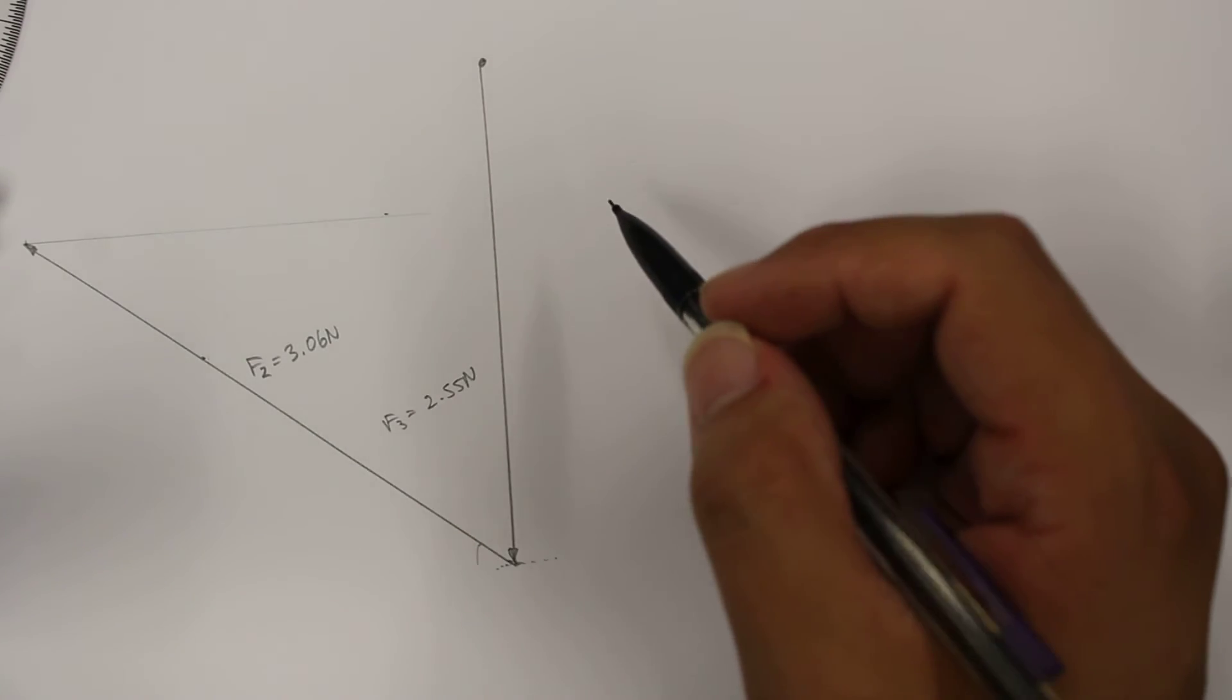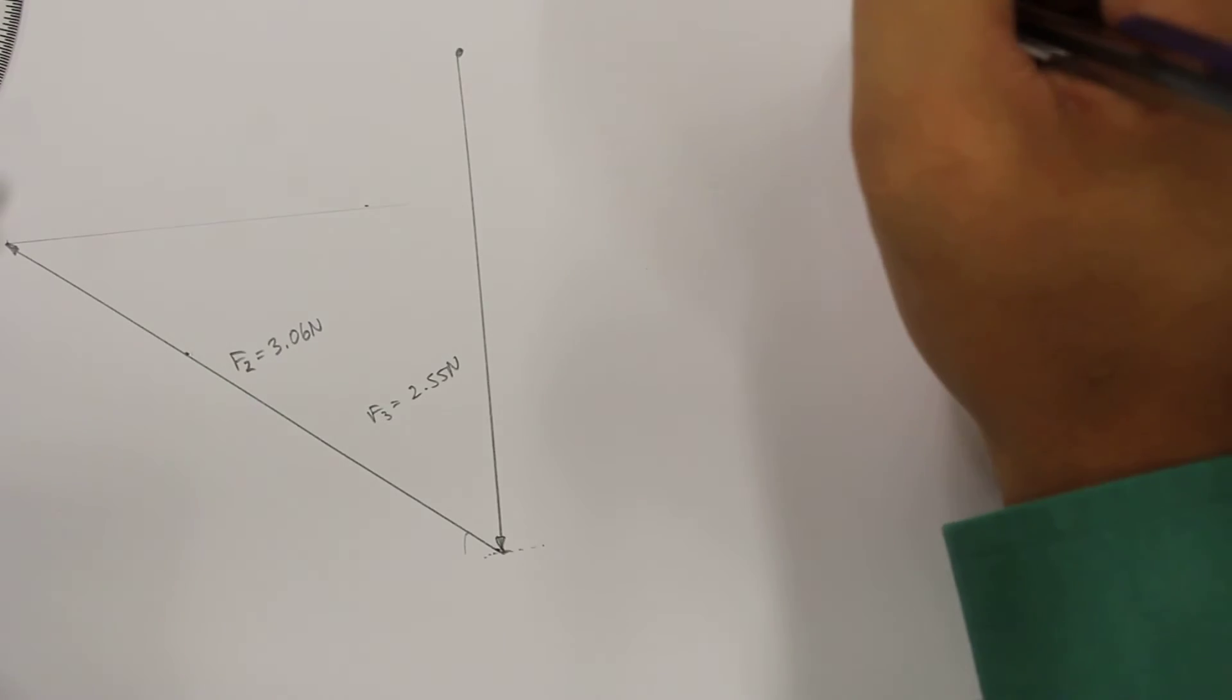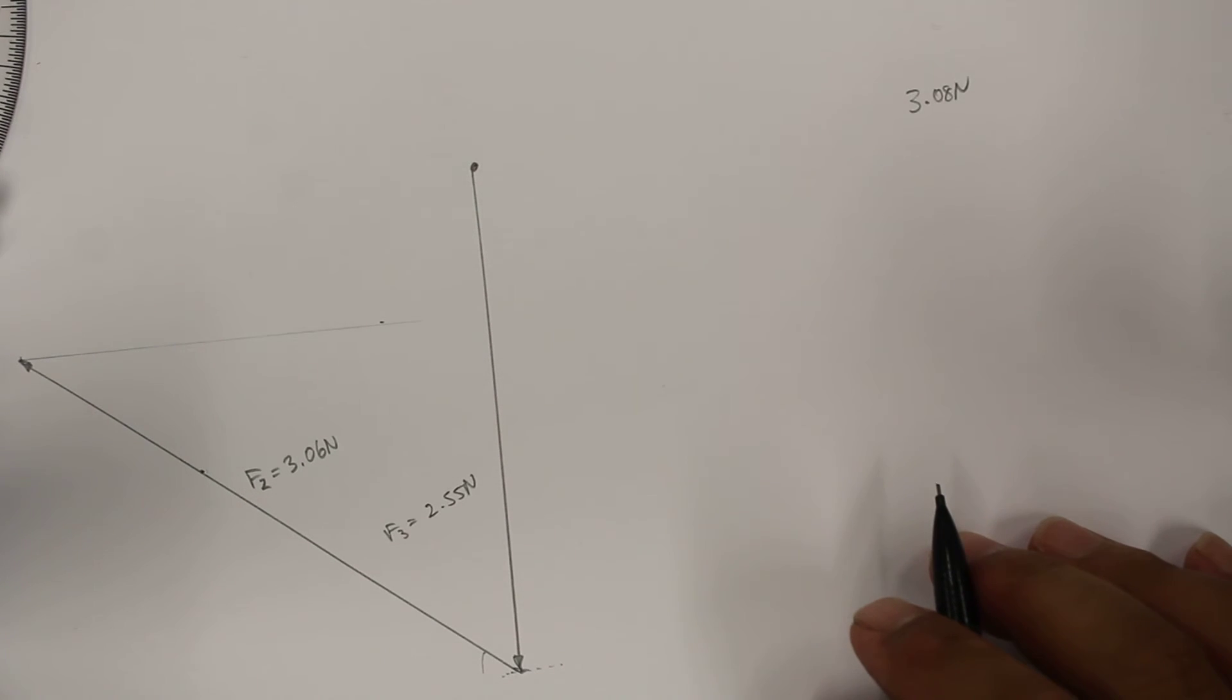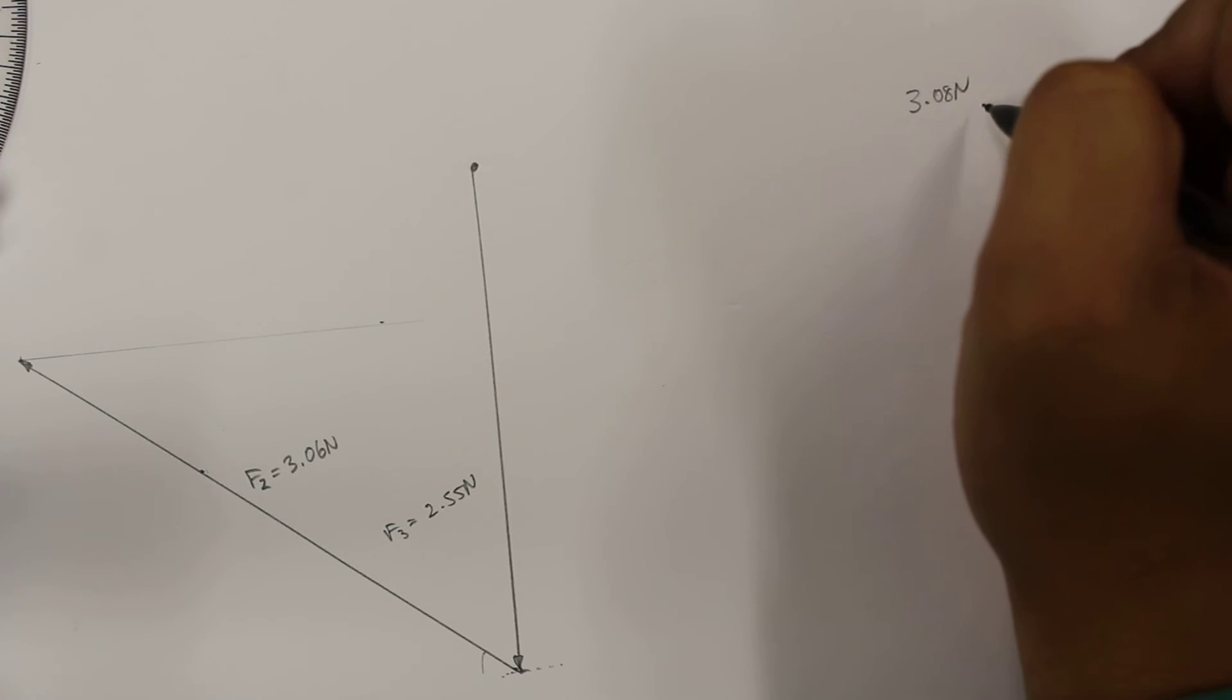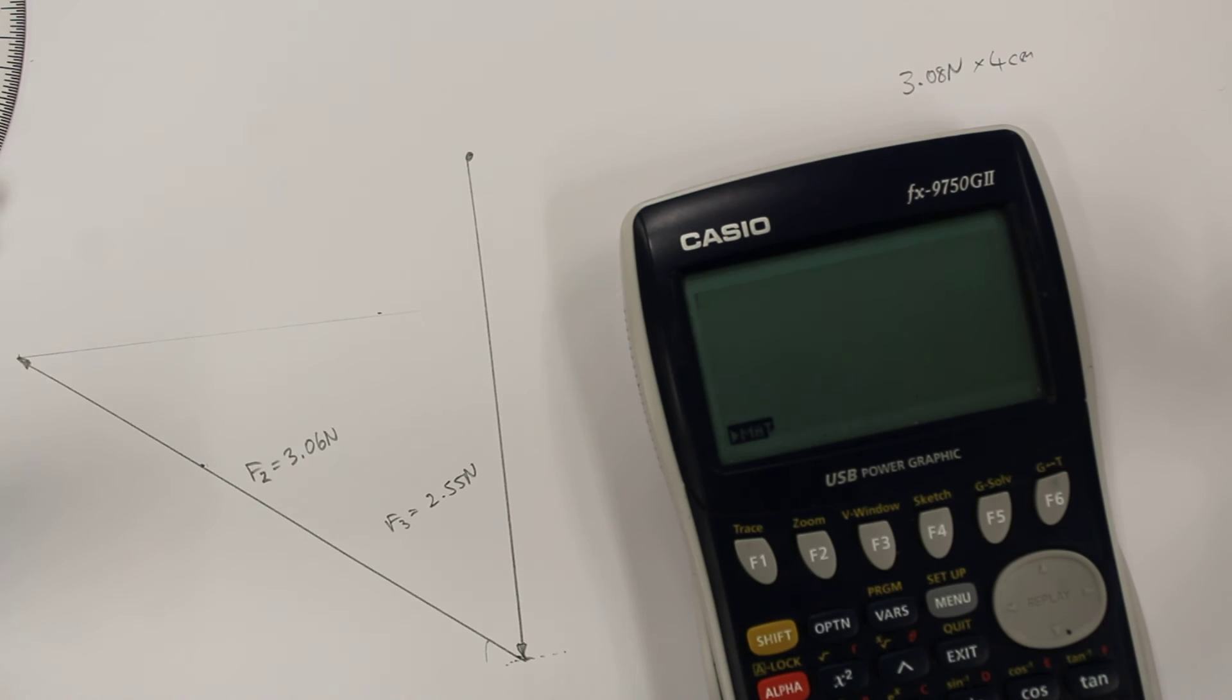Okay, and so F1 had a force of 3.08 Newtons. 3.08 Newtons, if we want to get it into centimeters according to this scale, we would multiply that by 4 centimeters, because there's 4 centimeters per Newton in this case. Alright, so 3.08 times 4, 12.32 centimeters, and the angle we measured before was 25 degrees.